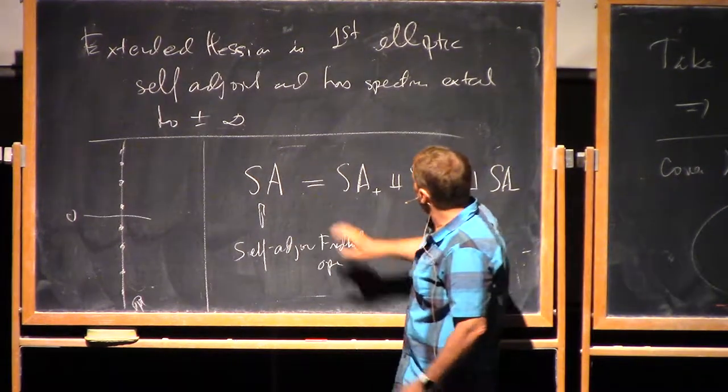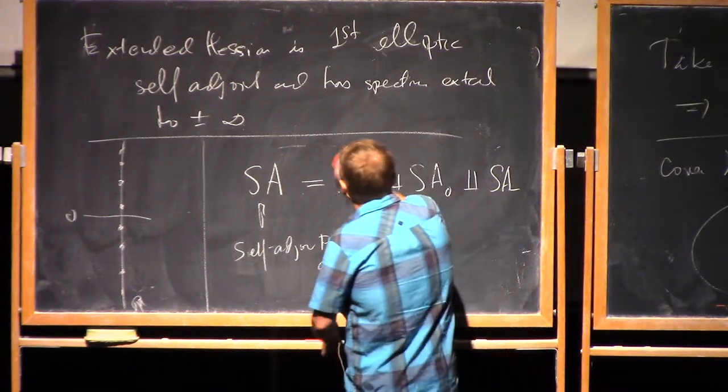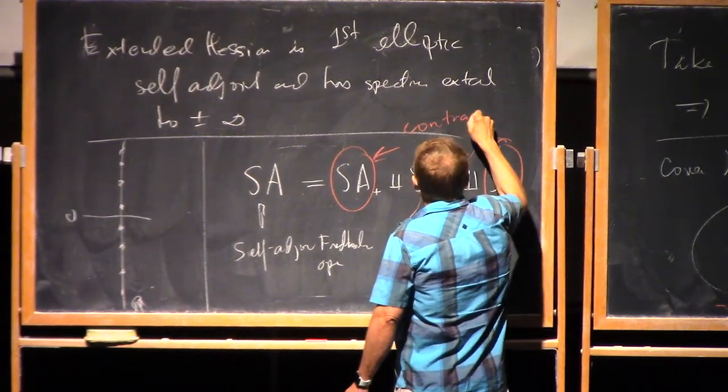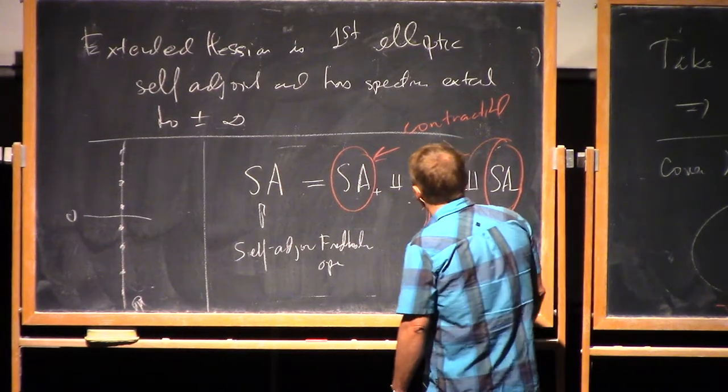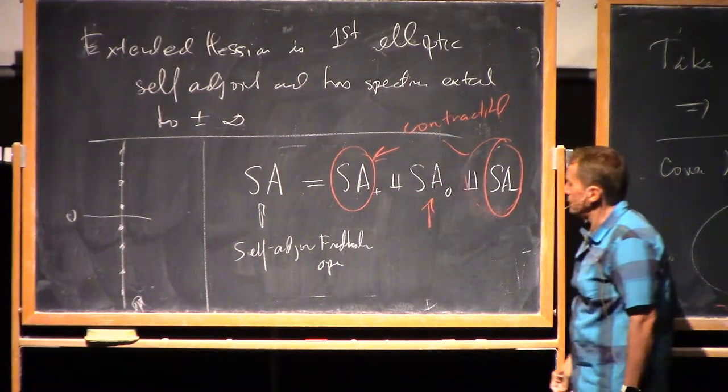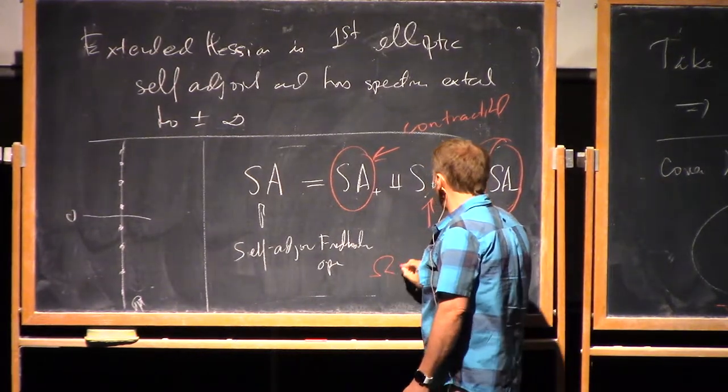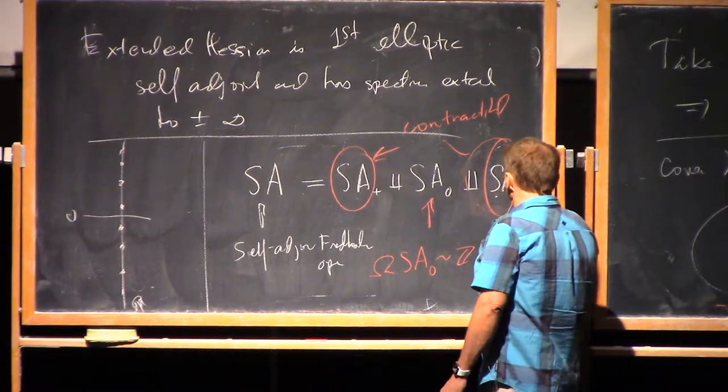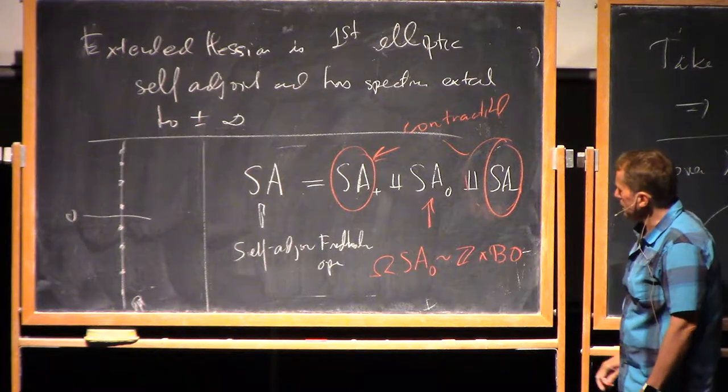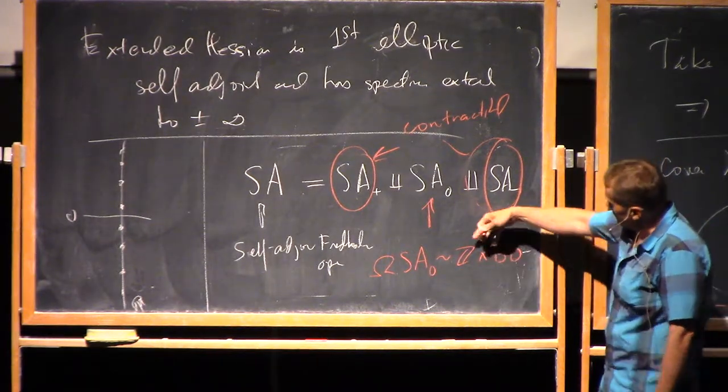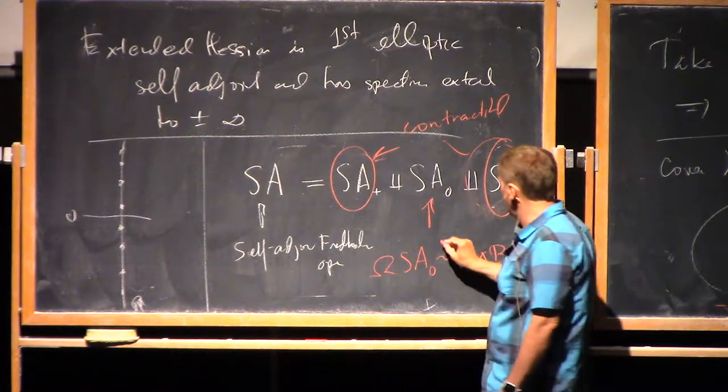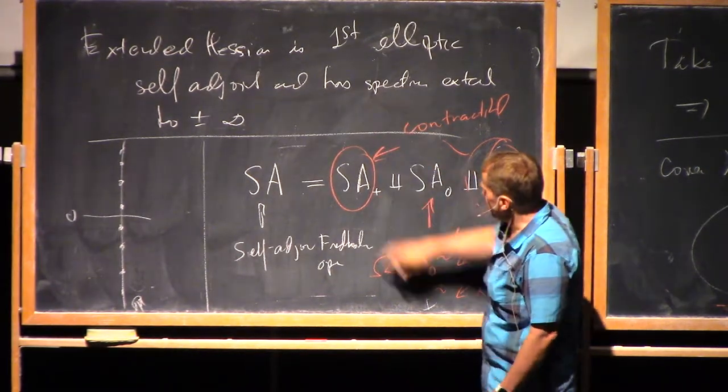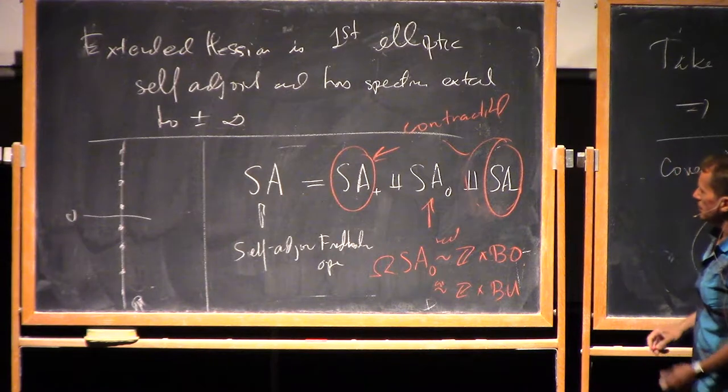Anyway, what's interesting is that this is contractible, these two. And this guy is topologically very interesting. It's loop space is... Well, if it's real operators, it's a classifying space of... It's loop space is the class... It's a classifying space for real K-theory, Z times BO, and in the complex case, it's Z times BU, if this is Hermitian operators. Anyway, these are real Fredholm operators, so this is the bit that we're interested in.